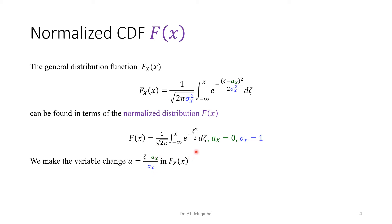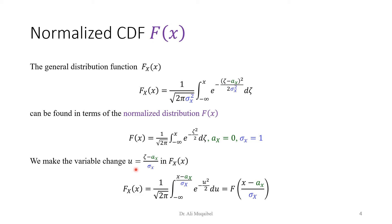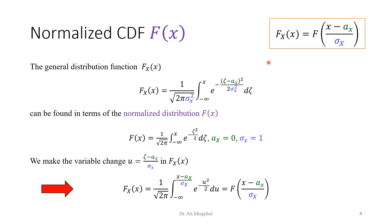How are the general and normalized CDFs related? By performing a change of variable — setting (ζ - a_X)/σ_X = u — we find a direct relation: F_X(x) equals the normalized CDF evaluated at (x - a_X)/σ_X. This is the fundamental relation: to find the general CDF, subtract the mean and divide by σ_X to get the normalized argument.